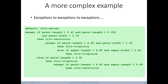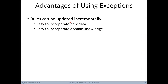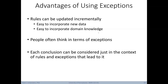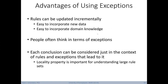In practice, exceptions can get unruly. A more complicated example uses the default rule in reverse — starting with the default of iris setosa, then indicating exception conditions when concluding iris versicolor or iris virginica. The advantage of exceptions is that rules can be updated incrementally as new data or domain knowledge arrives. People often think in terms of exceptions, and each conclusion can be considered in isolation — the locality property is important for interpreting larger rule sets. However, exceptions can lead to extreme overfitting.